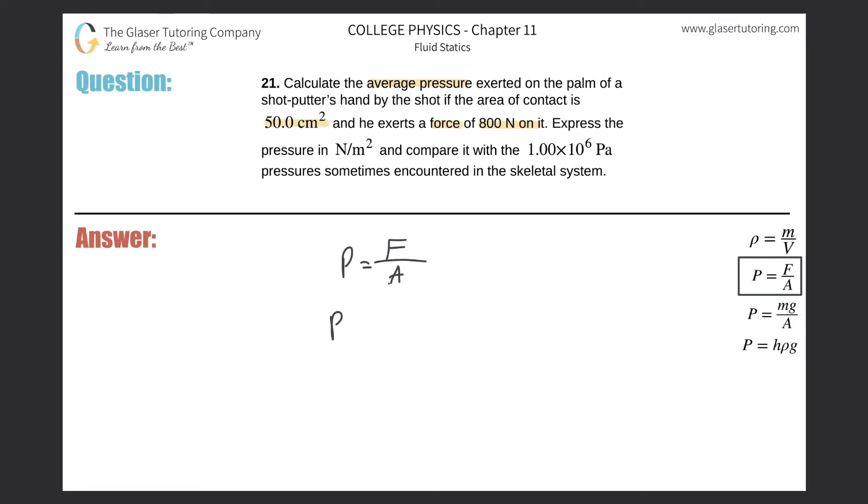So to find the pressure here, we need to know the force they told us, 800 newtons. And then we need to know the area. Remember, force is in newtons, area has to be in meters squared. So they told us in centimeters squared. So we just have to do a very quick conversion.